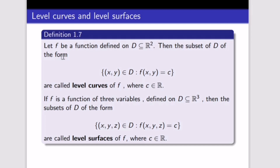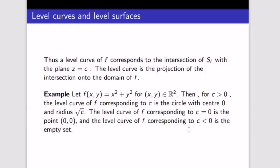Let f be a function defined on D, a subset of R². The subset of D of the form {(x, y) ∈ D : f(x, y) = c} is called a level curve of f, where c is an element of R. For three variables, D is a subset of R³ and the equivalent is called a level surface. So in two dimensions we have level curves, and in three dimensions we have level surfaces.